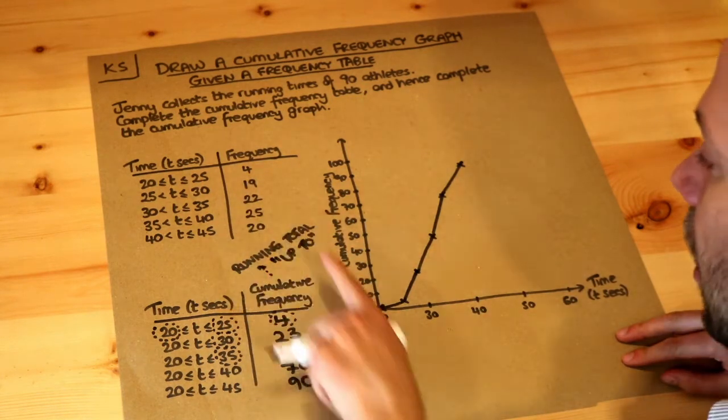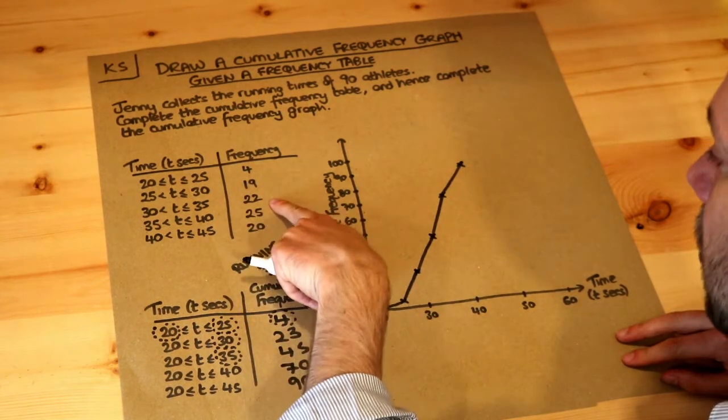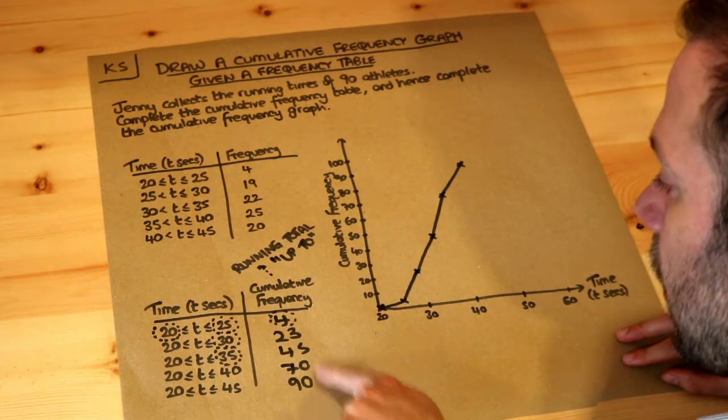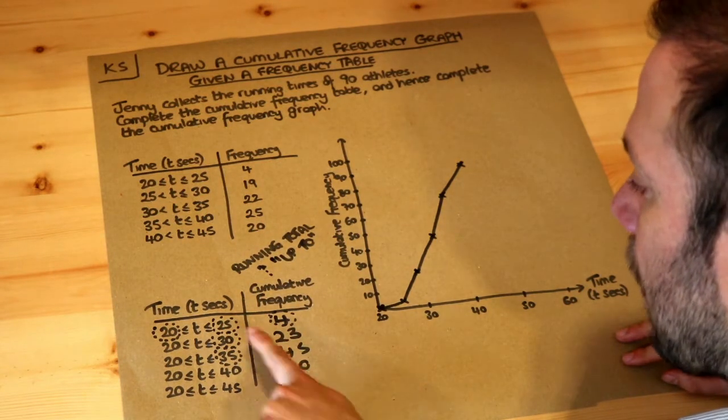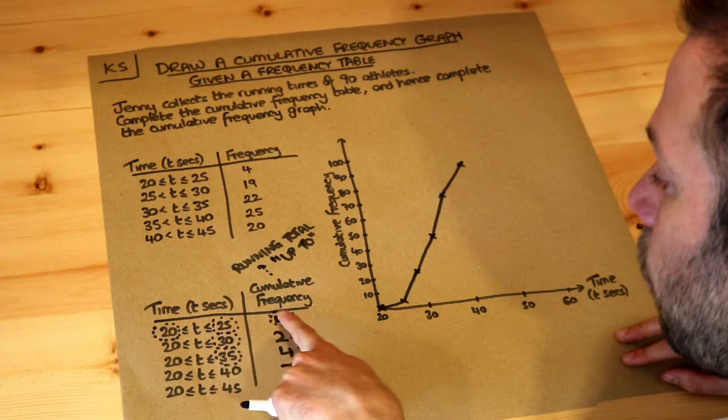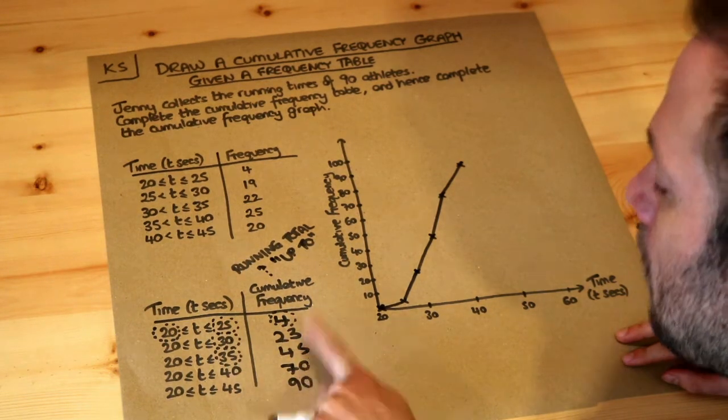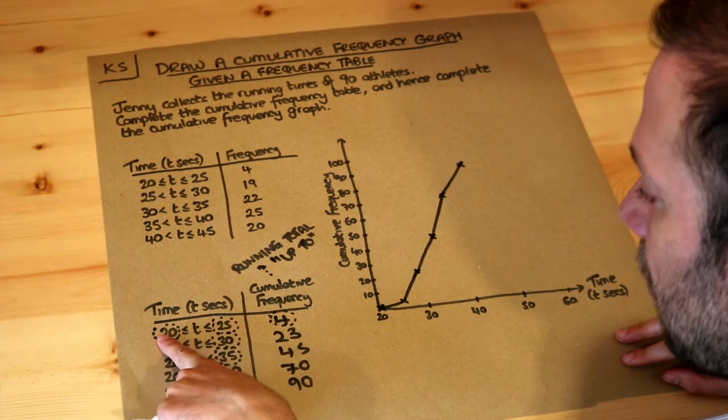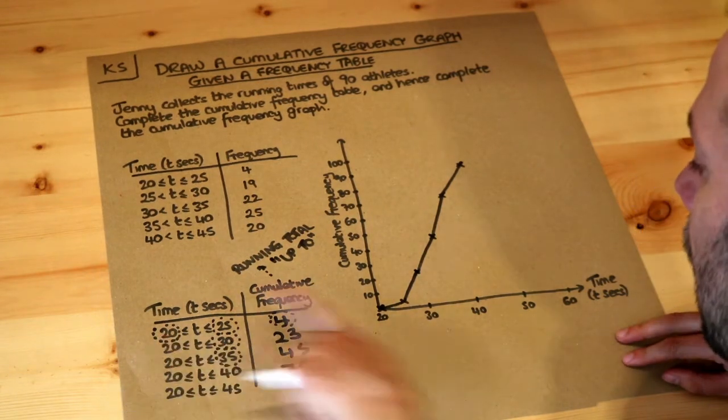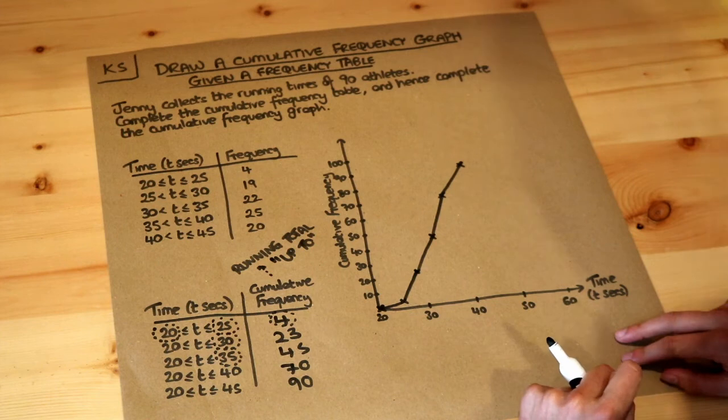So just find the running totals up to each value, these are your cumulative frequencies, then plot each end point with the cumulative frequency. But add the extra point, whatever this value is on the left, the top left, plot that with a cumulative frequency of 0.